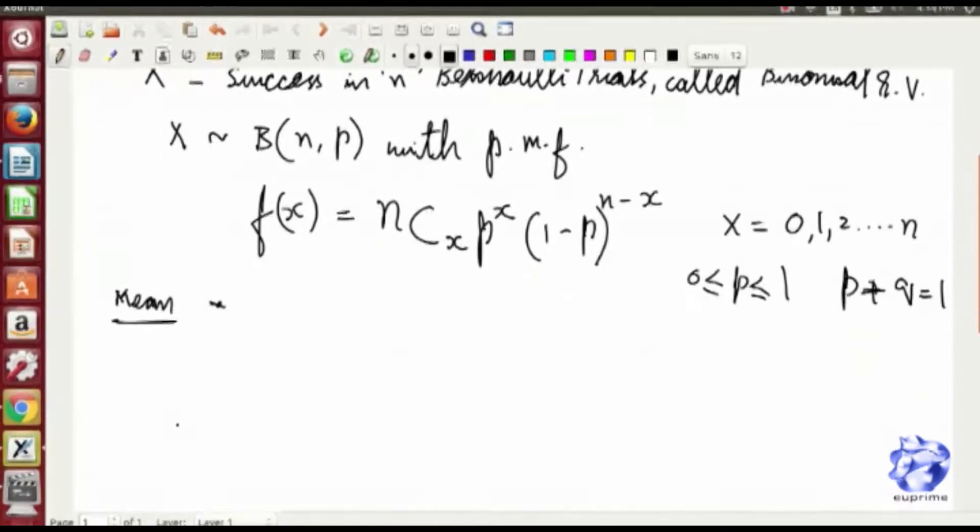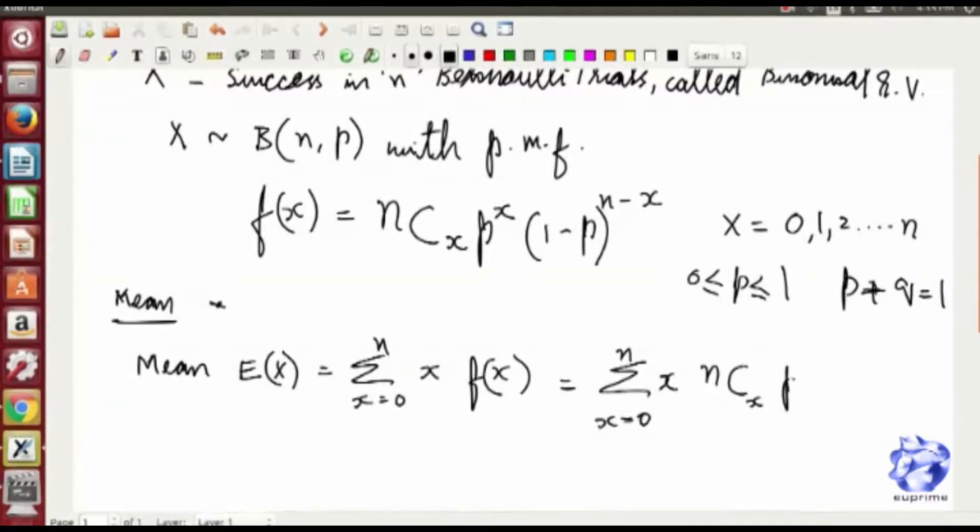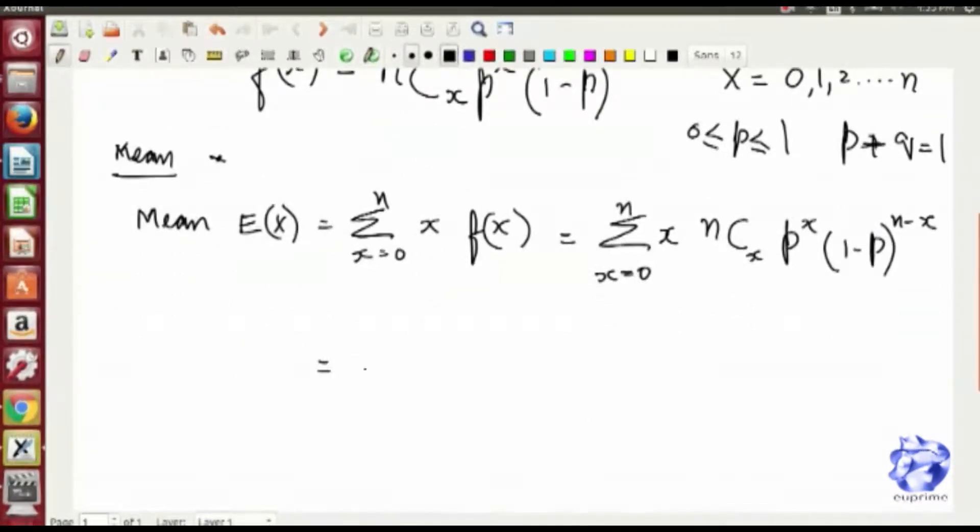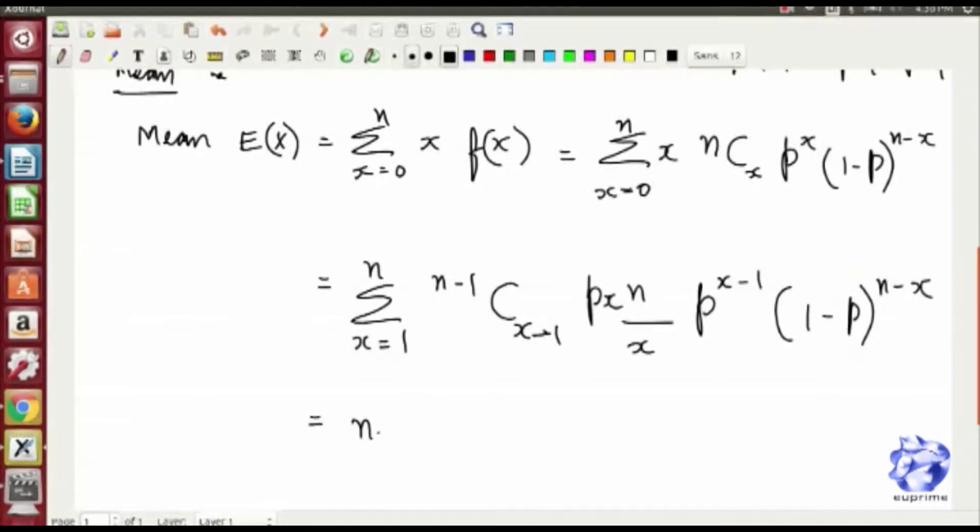We will evaluate mean and variance for binomial distribution. You have the probability mass function. On the numerator you have n minus x as opposed to 1 minus x. X takes values 1 to n, p takes values from 0 to 1, and q is usually 1 minus p.